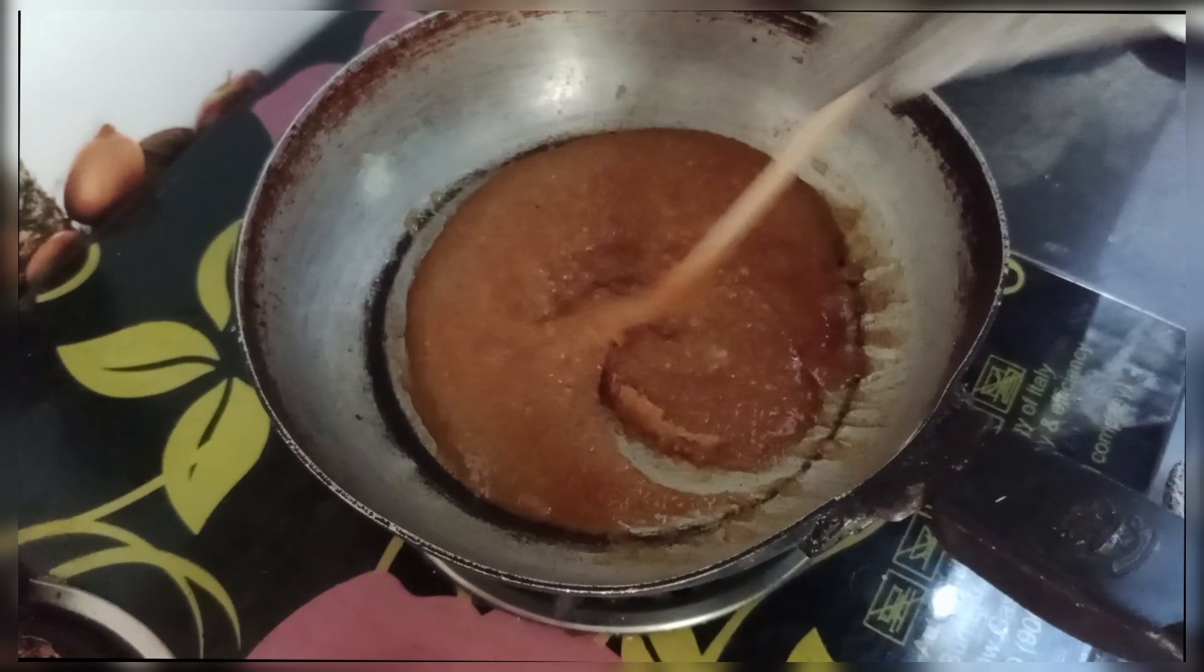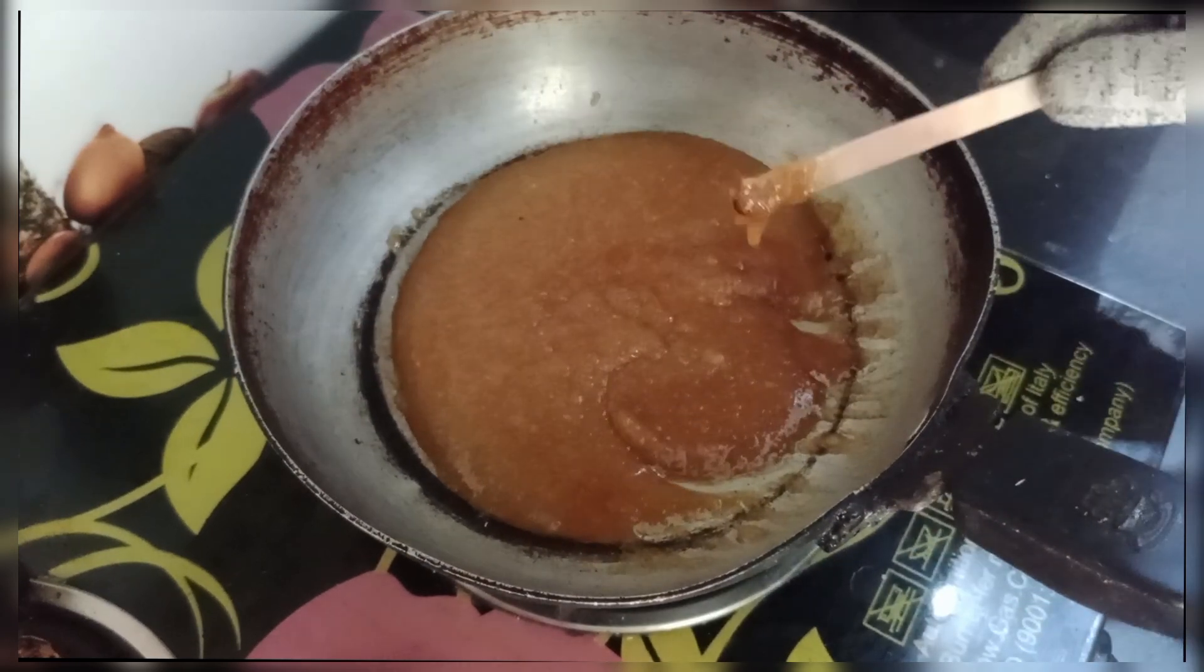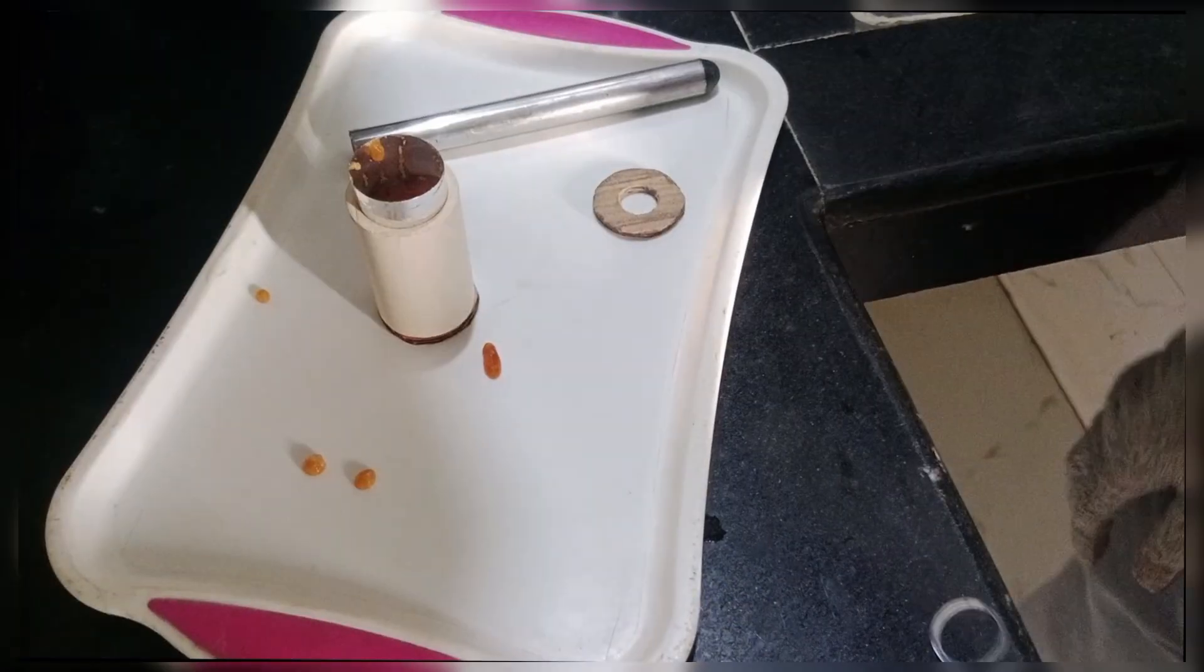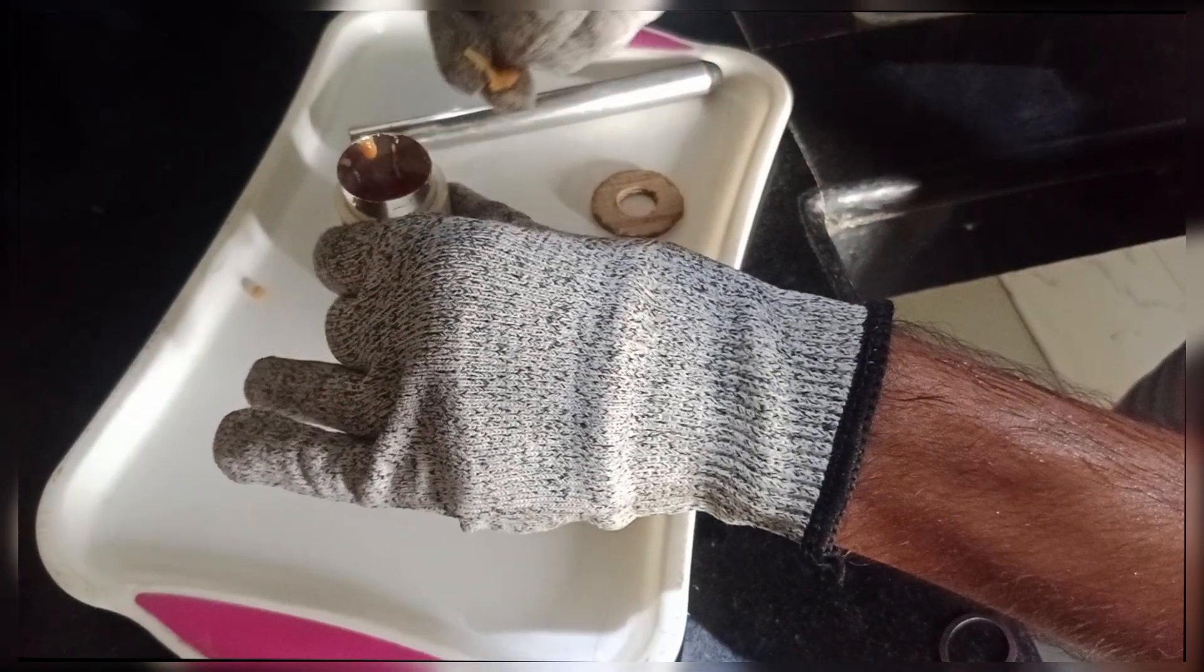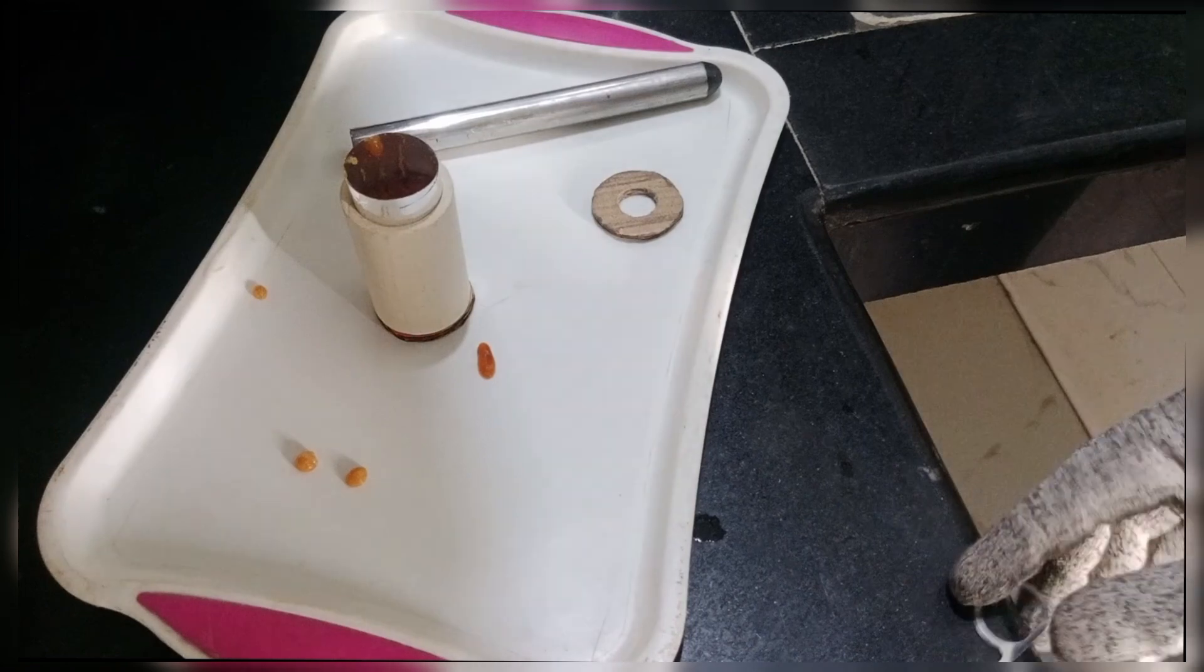Once it reached a thick, syrupy consistency, I began casting. I poured the hot fuel into the grain mold and, using a makeshift coring rod and some cardboard, I created a long core through the center of the grain.